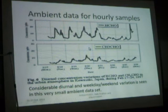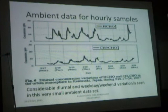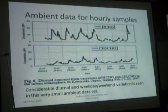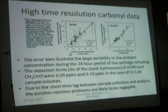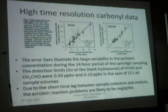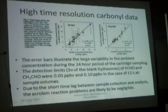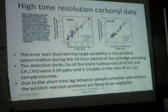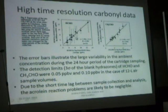So this gives you much better time resolution. This shows a comparison between the continuous data and the cartridge data. The range of values represented by the error bars are the range of hours of measurements for the sampling period for the DNPH cartridge. These were 24-hour samples and they were hourly continuous measurements. The mean agrees fairly well.